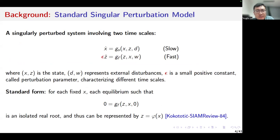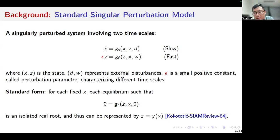This is the singularly perturbed system involving two time scales where x and z form the state, g and w represent the external disturbances, and epsilon is a small positive constant called the perturbation parameter, which is used to characterize the different time scales. When epsilon is very small, it is intuitive that the dynamics of the z subsystem is very fast. When the dynamics of the z subsystem is so fast that the dynamic transient performance can be neglected, then we may use some static steady-state map to approximate the z subsystem. In this case, the dynamic behavior of the system can be approximately described by the dynamics of the x subsystem.